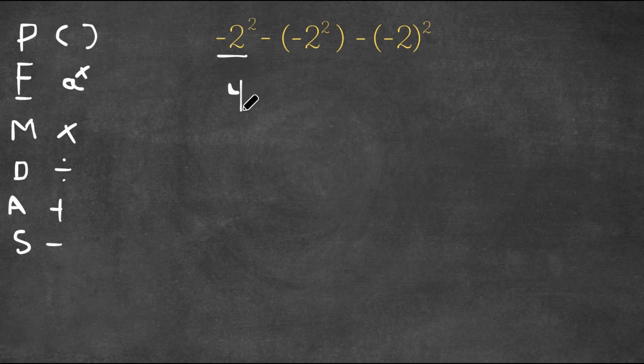So we get 4, and then we have the negative sign after. So the value of -2² is -4.